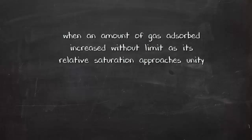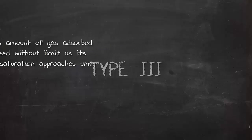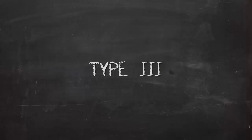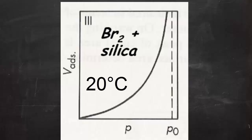When the amount of gas adsorbed increases without limit as its relative saturation approaches unity, type 3 isotherm is obtained. This happens during the adsorption of bromine on silica gel at 20 degrees Celsius on a macroporous surface.